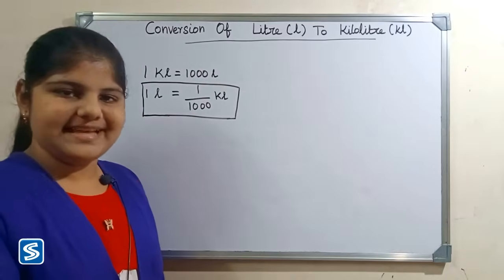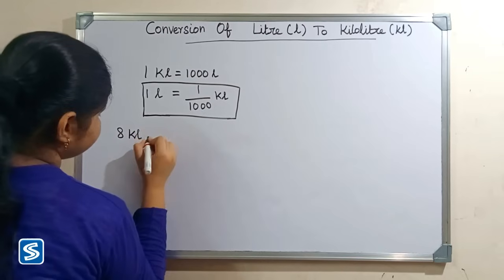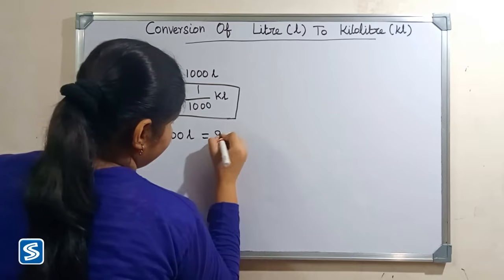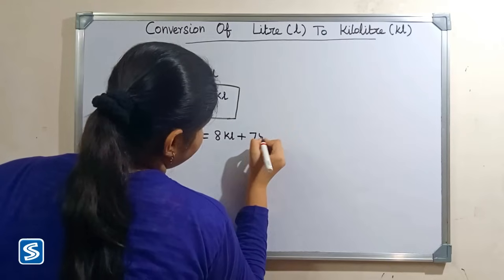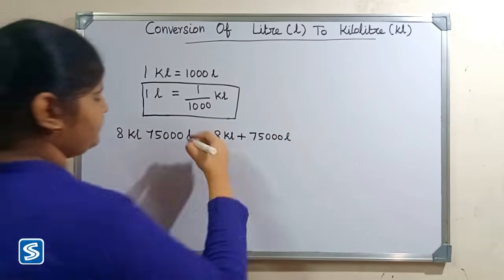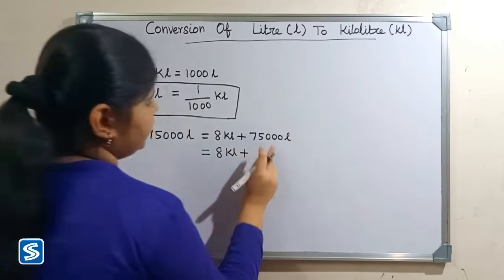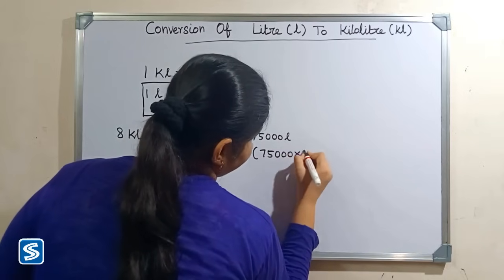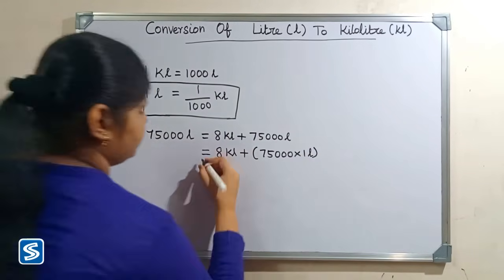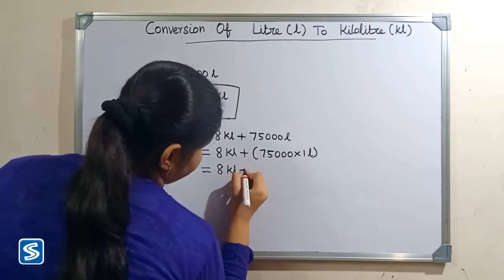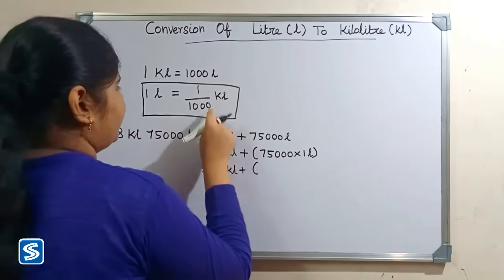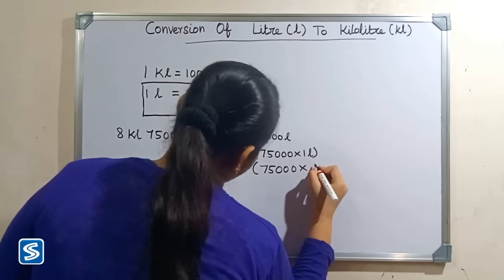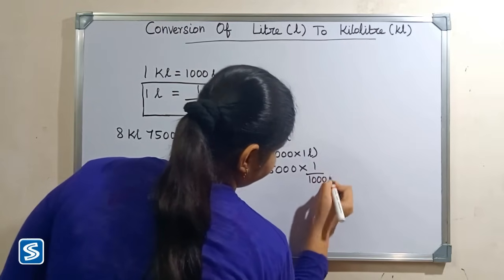Next we will take one more example: 8 kiloliters 75,000 liters. This will be 8 kiloliters plus 75,000 liters. The 75,000 liters can be written as 75,000 multiply one liter. Now we substitute one by one thousand kiloliters in place of one liter, giving us 8 kiloliters plus 75,000 multiply one by one thousand kiloliters.